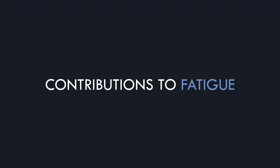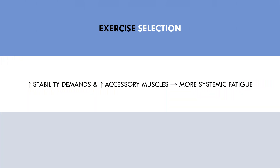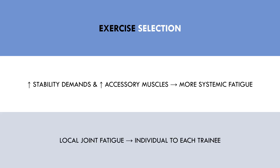Now that we've explored systemic and local recovery capacities, let's cover what factors actually contribute to inducing fatigue and how these relate to hypertrophy training. The first factor is exercise selection. Certain exercises can be more or less demanding from a systemic and local perspective. Generally, exercises with high stability demands involving multiple muscle groups are the most systemically fatiguing — for example, barbell back squats are probably more systemically fatiguing than a leg press. In terms of local joint fatigue, different exercises feel more or less taxing for different people, so each trainee needs to experiment with what provides a good stimulus without causing joint pain over time.